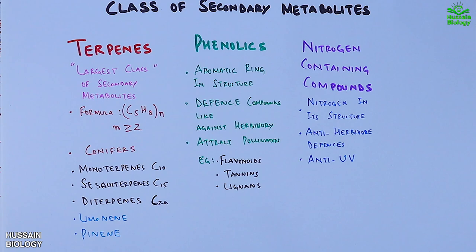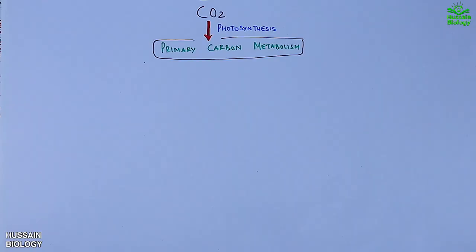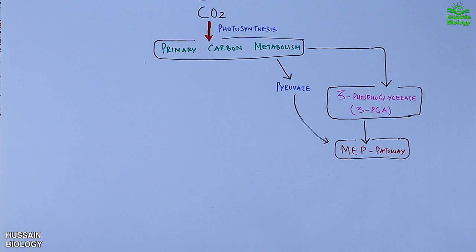Now let's see the general overview of metabolism of these secondary metabolites. First we have carbon dioxide which drives primary carbon metabolism via photosynthesis. From this primary metabolism we get 3-phosphoglycerate, that's 3-PGA. Then this 3-PGA drives into MEP pathway, that's methyl erythritol phosphate pathway. Pyruvate also leads into MEP pathway. Furthermore, from pyruvate we get acetyl-CoA which leads into MAP pathway, that's mevalonate pathway.